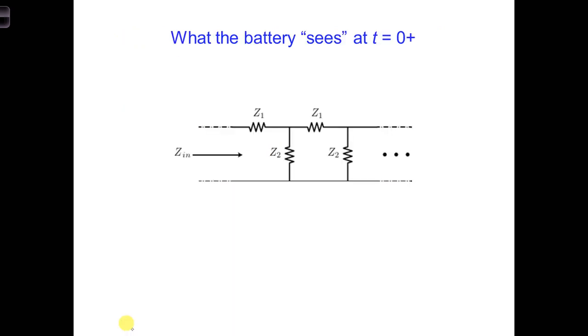In other words, to calculate what the battery sees, we essentially want to know what is z in, the input impedance at the beginning of the transmission line. Let's consider a generalized scenario, where the complex impedance z1 can be used to represent the resistor and inductor in series, and z2 is used to represent the resistor and capacitor in parallel. We'll use some knowledge from a typical circuits class to come up with an expression for z in.